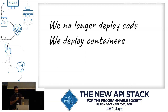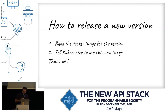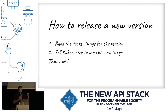The main thing to remember: we no longer deploy code, but we deploy containers. Our unit of packaging is the container. When we want to release code in Kubernetes, we first build the container and push it to the registry. To release a new version: build the Docker image with your application source code and tell Kubernetes to use the new image. It simplified the deployment process a lot. Deploying to Kubernetes isn't easy, but once it's done, it's easy to deploy applications.